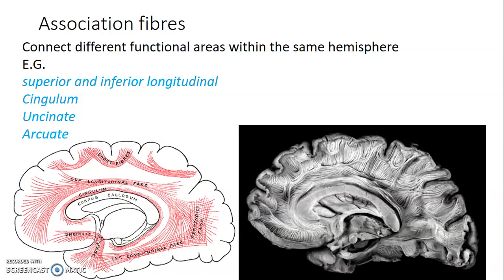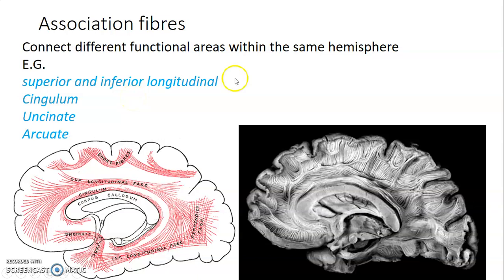Examples of association fibers include the superior and inferior longitudinal fasciculus, the cingulum within the cingulate gyrus just above the corpus callosum, the uncinate fasciculus connecting the frontal to the temporal lobe, and the arcuate fasciculus which we had already discussed.